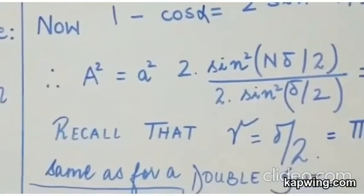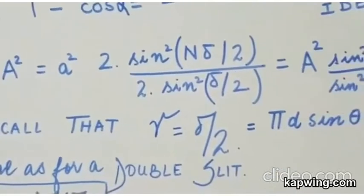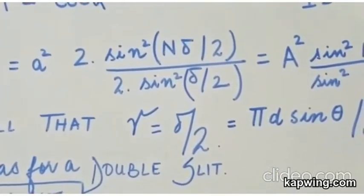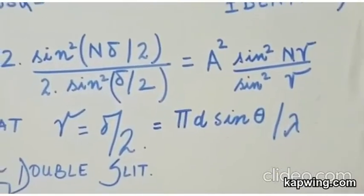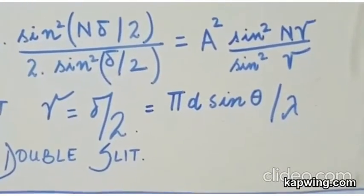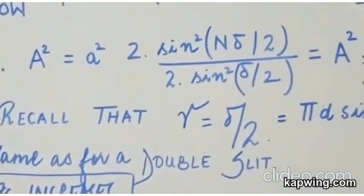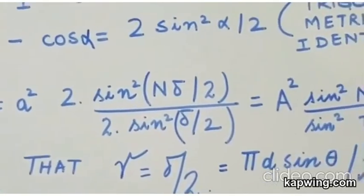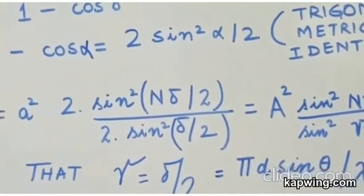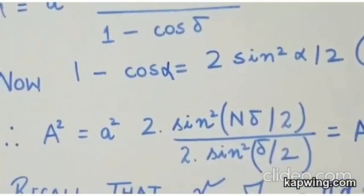Please recall that when we were doing or studying the double slit pattern we had defined gamma to be equal to delta by 2. Delta by 2 is simply the difference phi d sin theta upon lambda. And this is the same as for a double slit. So what have we done? We have established the intensity distribution from an ideal grating. More in the next segment. Thank you for your time and attention.